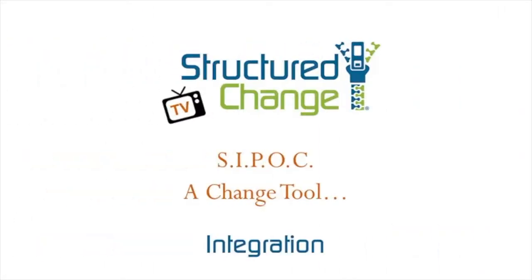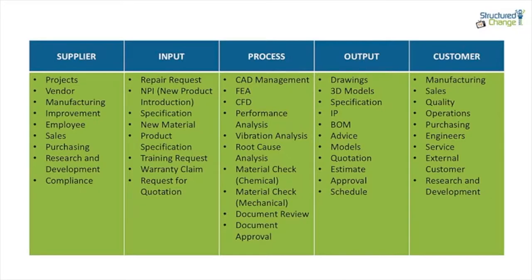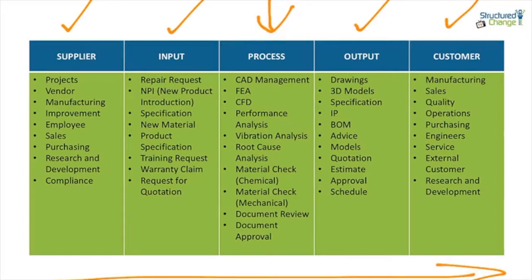We've completed now all five columns or areas of our SIPOC for our engineering division. We've been able to go through each area, document it down, and place it in a complete table. We started with customer, then output, then supplier, then input, and then we ended with process — bringing it all together, so we can see demand translated through to value out the other side, or what we hope to be an actual translation of value.